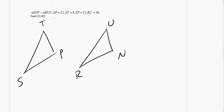STP, STP, RUN, RUN. SP is 12, ST is 8, TP is 11, RU is 36.